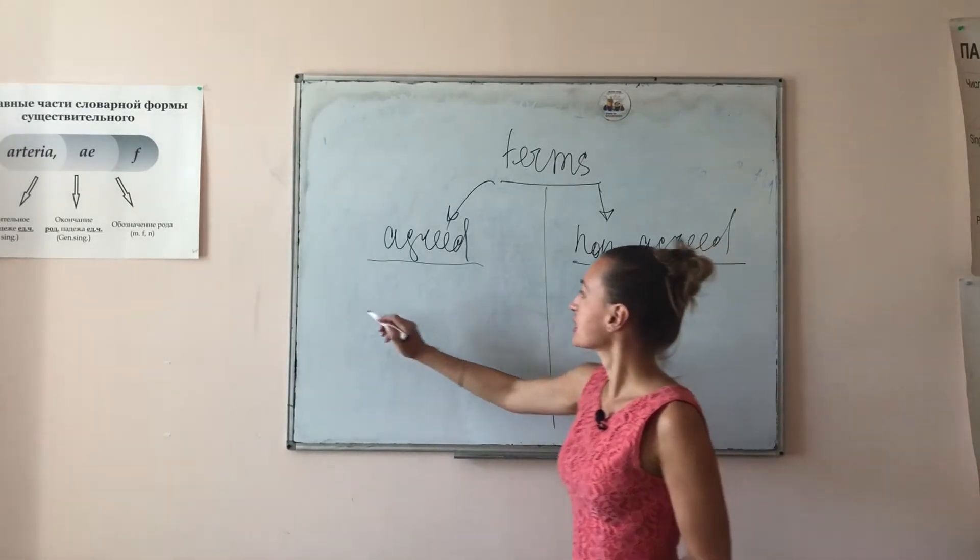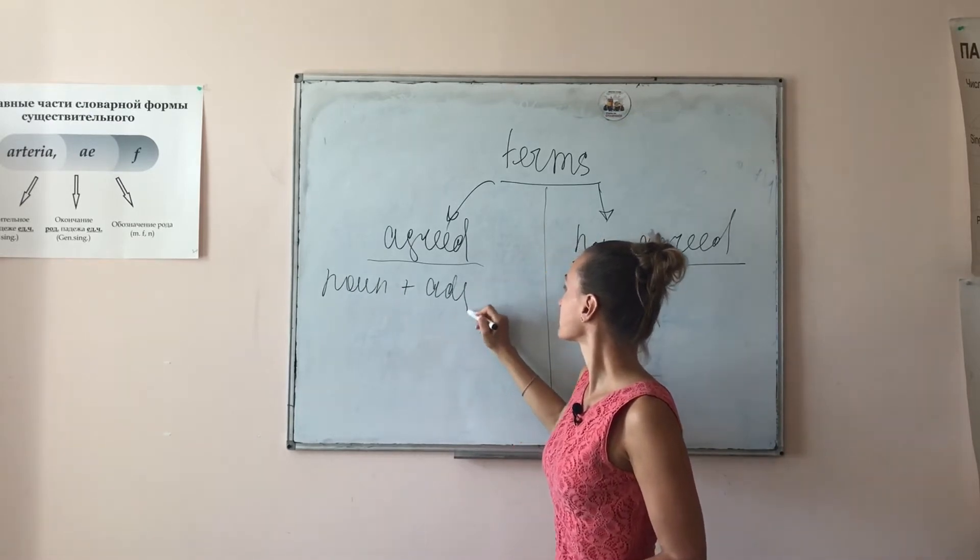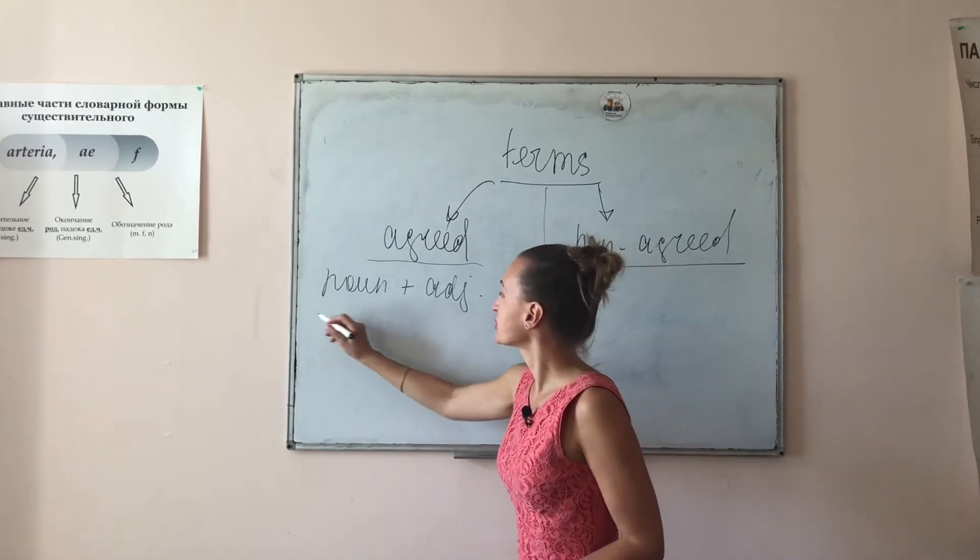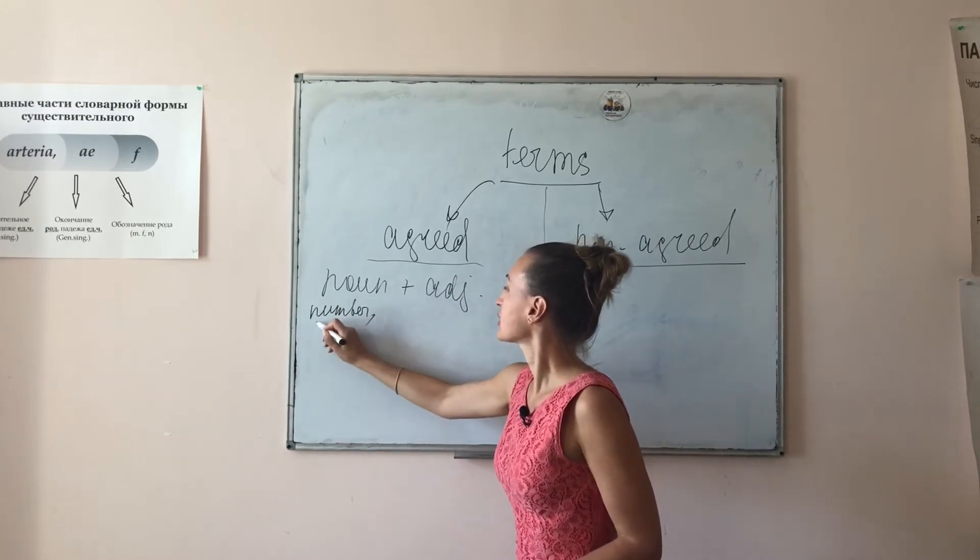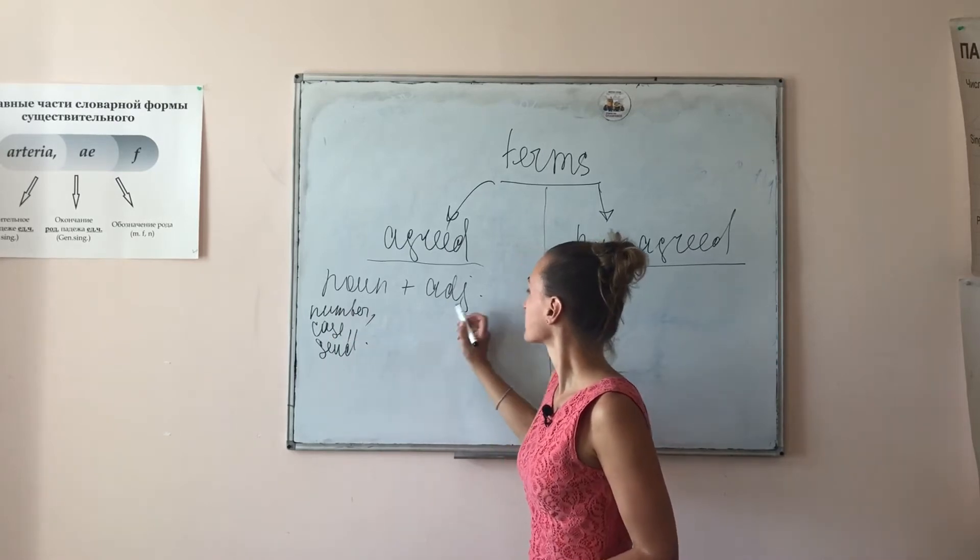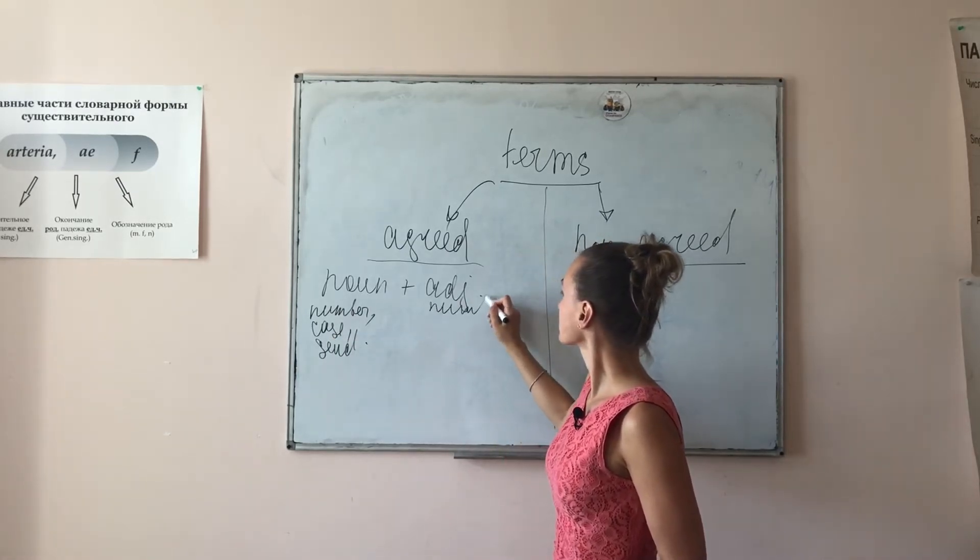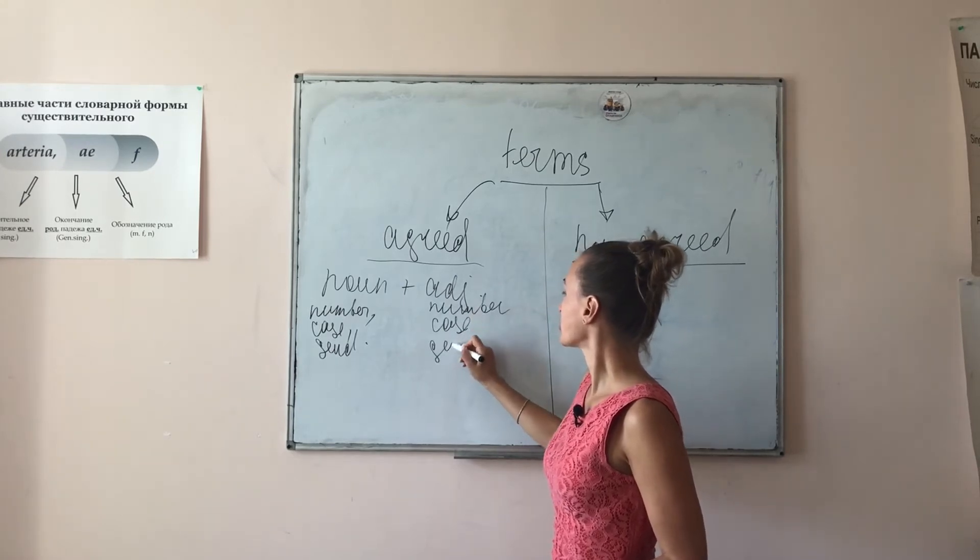Agreed terms consist of noun plus adjective. Besides, they will be equal in number, case, and gender. The same as here: number, case, and gender.